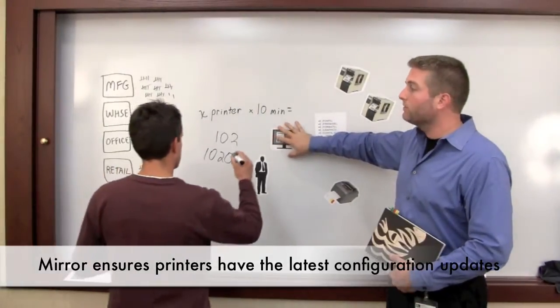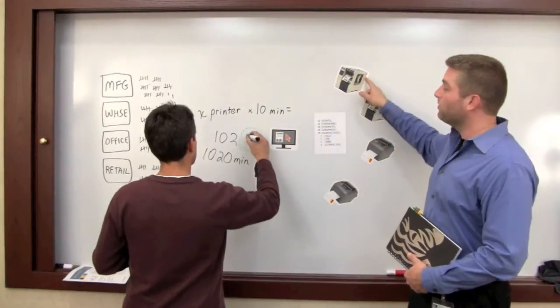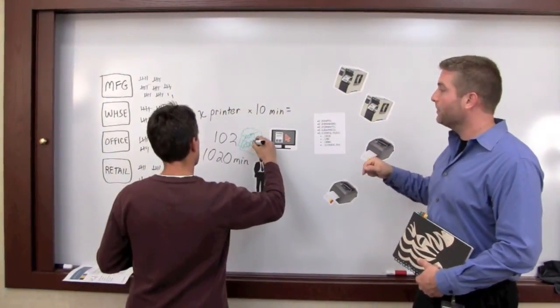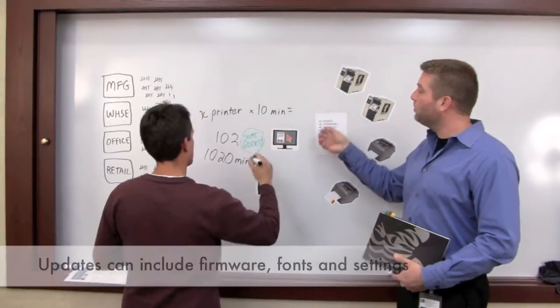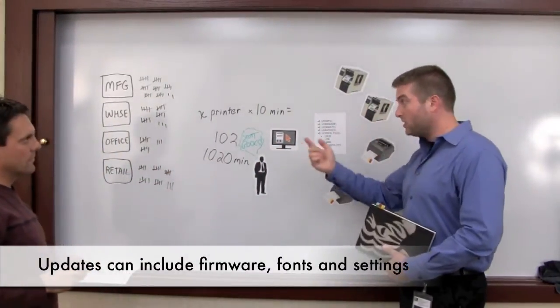And so what Mirror does is it allows you to place all these files onto a network folder. And that network folder then is a source for all of the printers to go and seek out the latest and greatest files. This is what we call a pull technology instead of a push where the administrator pushes it out to each one of these printers.